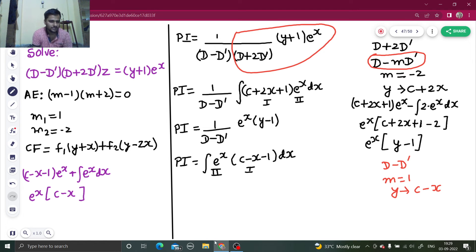E^x is common, c minus x minus 1 from here and plus 1, so minus 1 plus 1 is 0. E^x and c minus x is your y, so ye^x is what finally you are getting. Final PI is your ye^x. Z equals to CF plus PI as you all know is your final solution: f1(y plus x) plus f2(y minus 2x) plus ye^x.